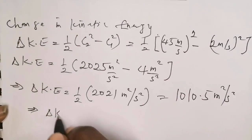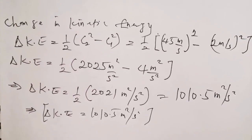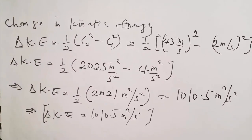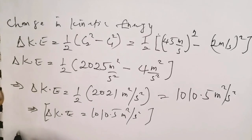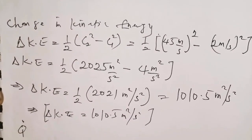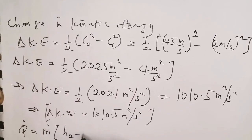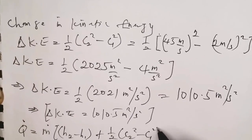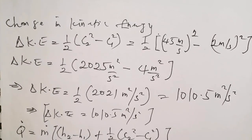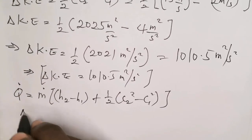We now have all values needed for the steady flow energy equation. The heat flow rate Q̇ equals the mass flow rate multiplied by the sum of the change in enthalpy and the change in kinetic energy: Q̇ = ṁ × [(H2 - H1) + ½(C2² - C1²)]. We plug in: mass flow rate = 0.42 kg/s, ΔH = 2,909.5 kJ/kg, ΔKE = 1,010.5 m²/s².